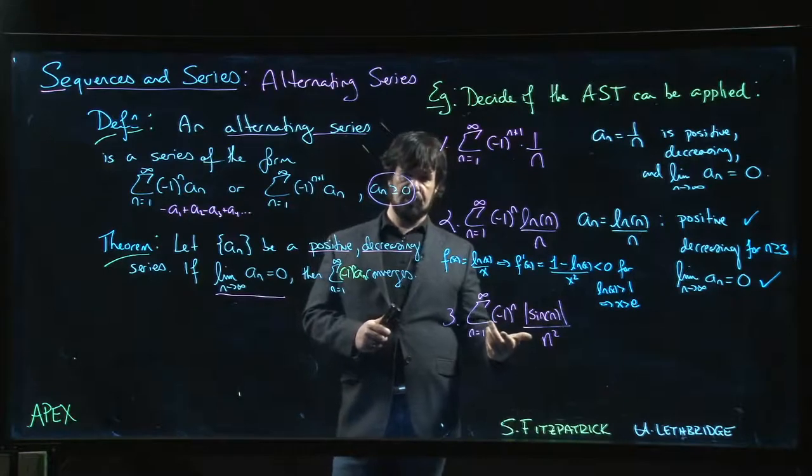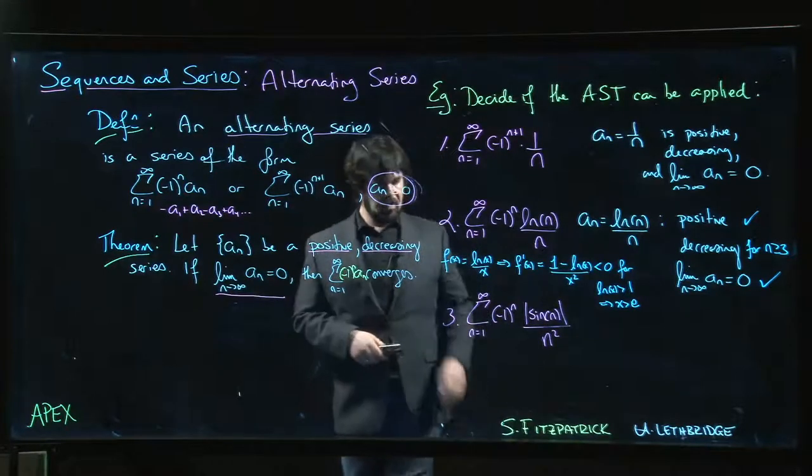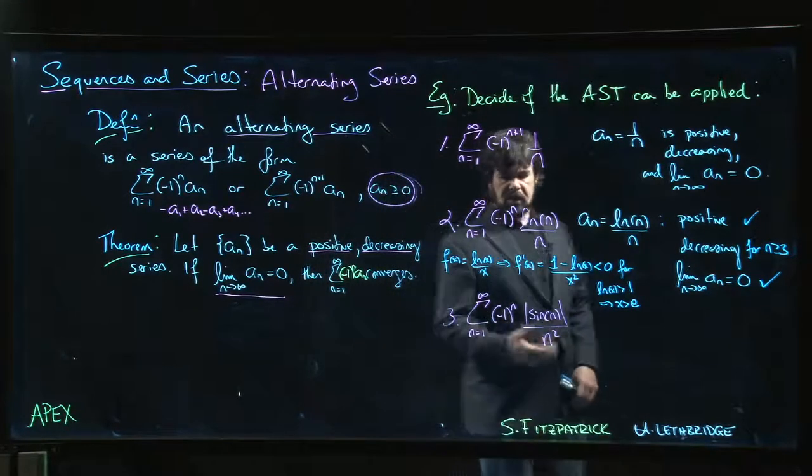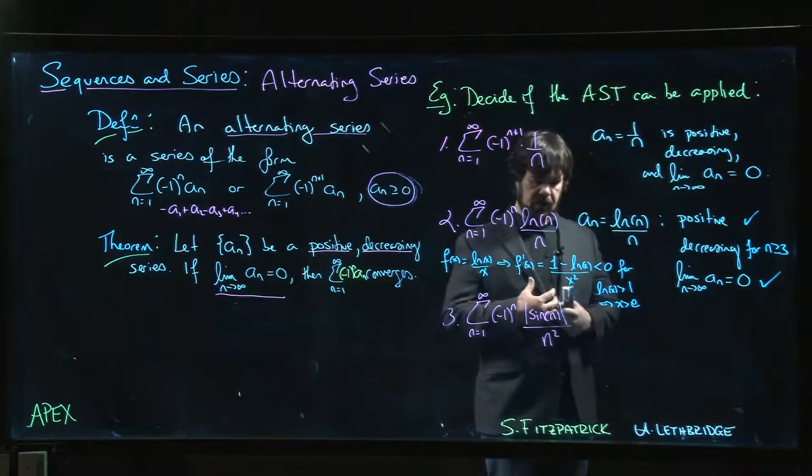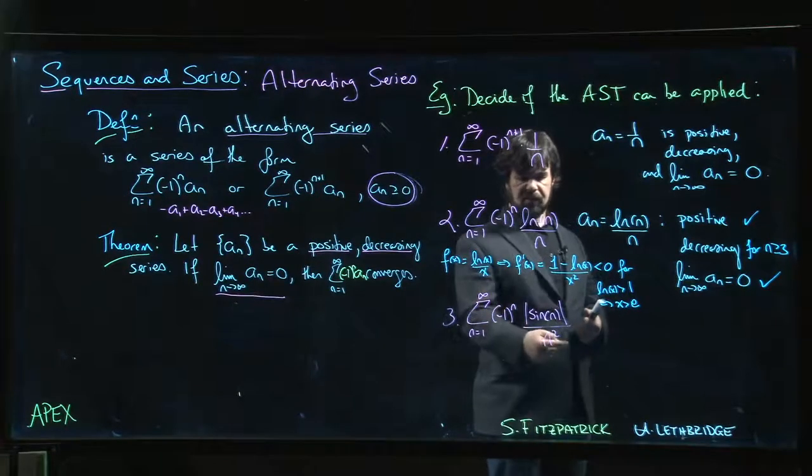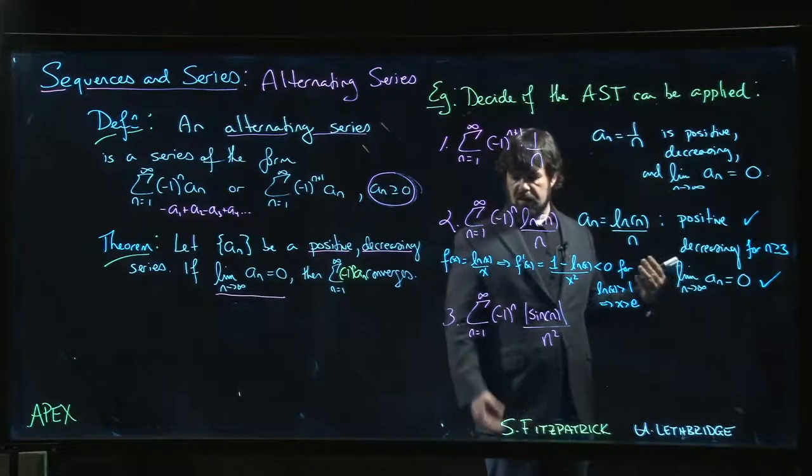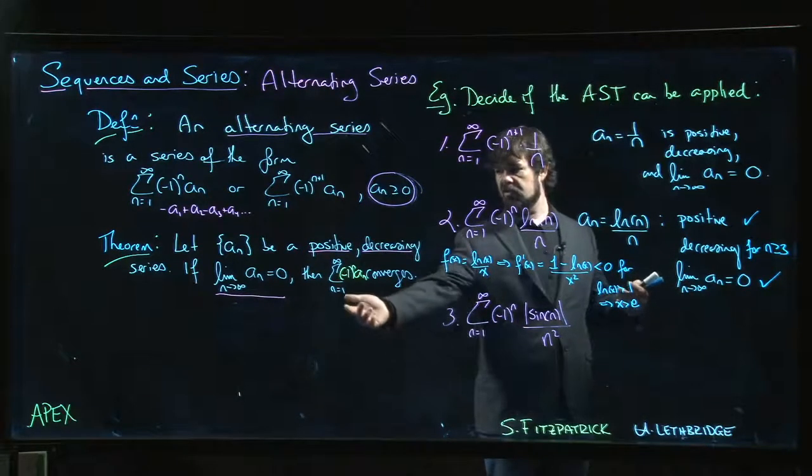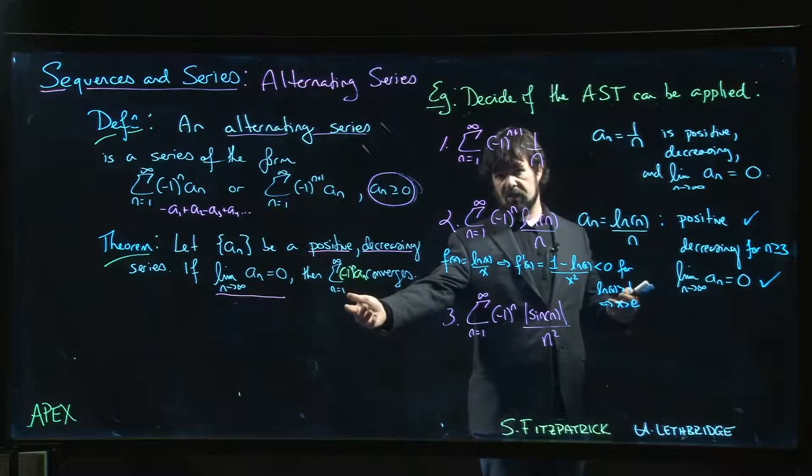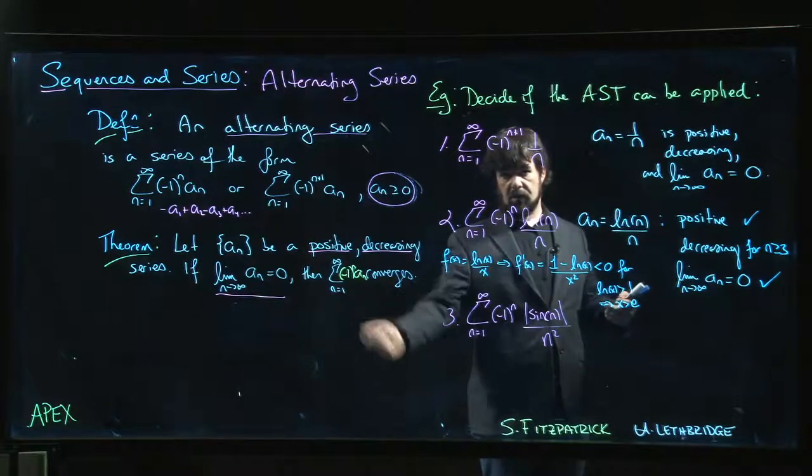So it does converge, and it converges just by comparison with the p-series, one over n squared. So it converges, but you can't establish that convergence using the alternating series test. You need to use a different theorem to show that it converges.